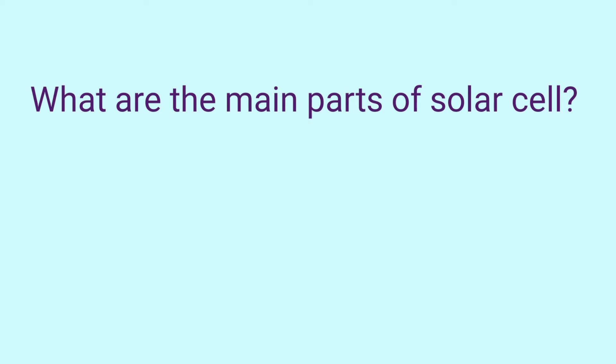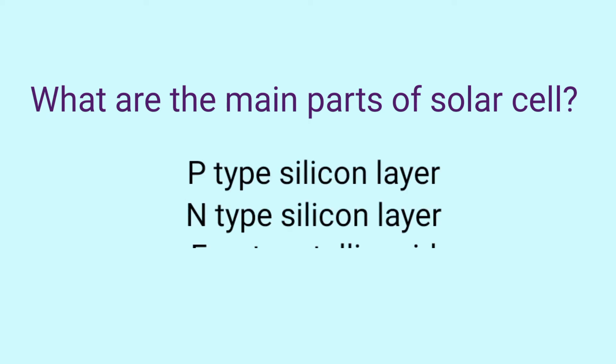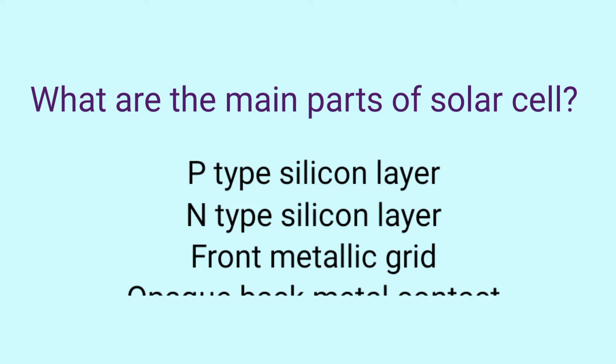Mention the main parts of solar cell. We have p-type silicon layer, n-type silicon layer, front metallic grid, opaque layer, and back metal contact.